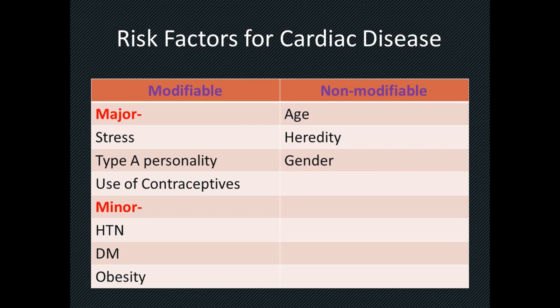The second flowchart is about risk factors for cardiac disease. There are two types: modifiable and non-modifiable. Modifiable risk factors are further divided into major — stress, Type A personality, and use of contraceptives — and minor — hypertension, diabetes, and obesity. We can modify stress through stress-relieving strategies, work on Type A personality habits, and adapt other contraceptive methods. Physiotherapy helps a lot with hypertension, diabetes, and obesity. Non-modifiable risk factors include age, heredity, and gender.